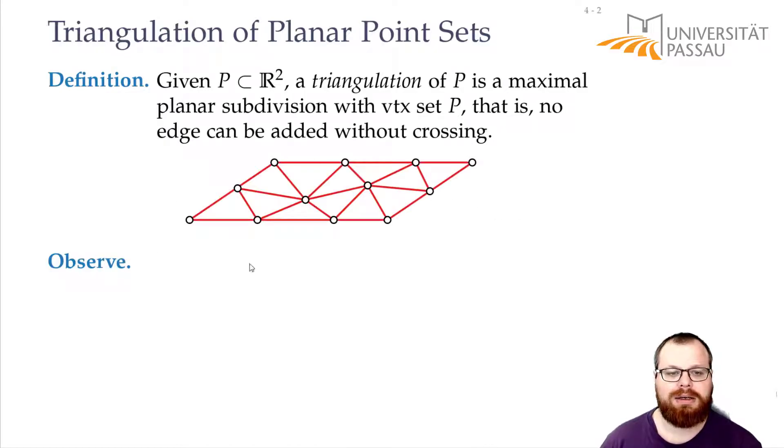So how does that look like? Here for example like this, we have all these connections and whatever edge we want to add here, as long as we draw it as a segment, we will always get a crossing.